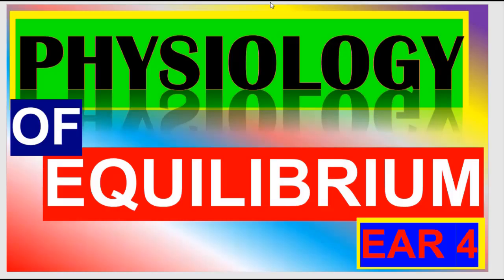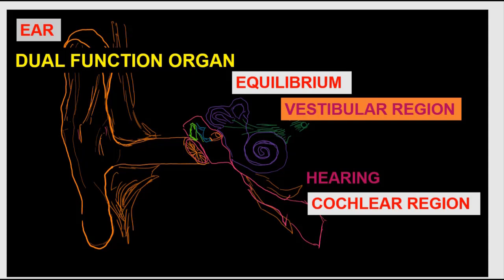Welcome back. This video is about physiology of equilibrium, in the plane of ear and hearing. We already said that our ear is a dual function organ — it contains a dual sensory apparatus. One part of the inner ear is dedicated to the process of hearing, and the other part is dedicated to equilibrium — the balance of the body. The receptors for hearing are placed in the cochlear portion of the inner ear, while the receptors to know our body position in relation to three-dimensional space are placed in the vestibular region.